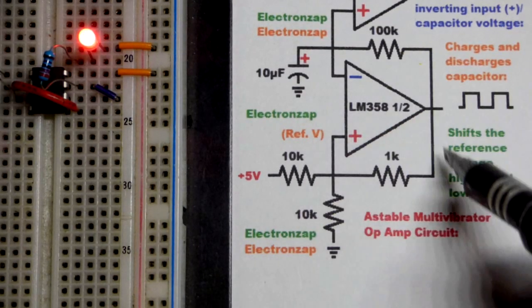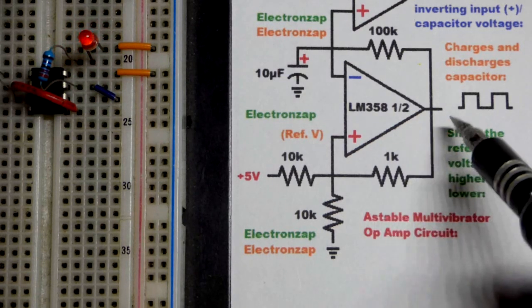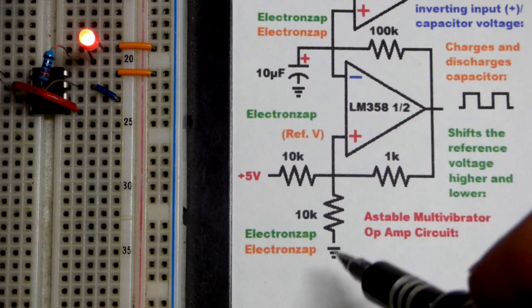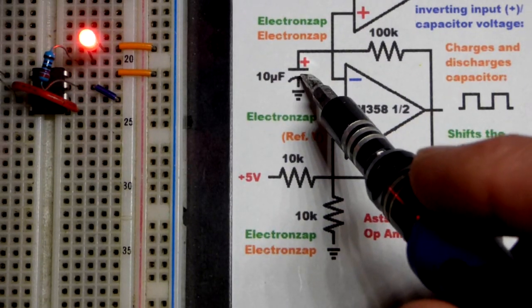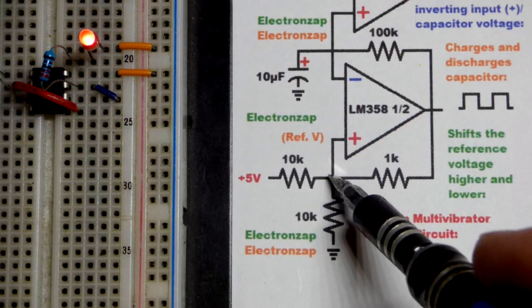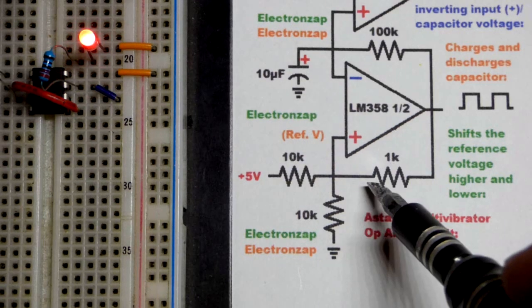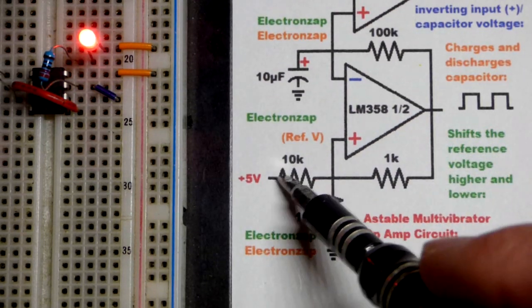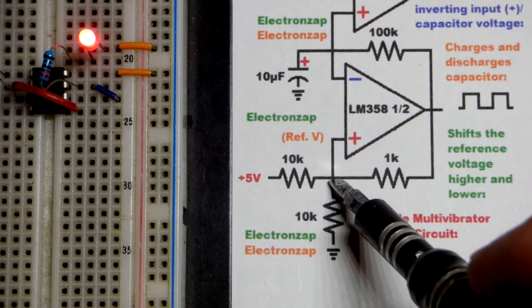The number one op amp is wired in astable mode. We looked at this in the last video. So it's going to keep going, the output high and low based on the timing that we set here. So the timing is the capacitor charging and discharging. The reference voltage to determine whether it's charging or discharging is the non-inverting input here. So we have feedback coming back here. These two resistors are trying to keep it to about 2.5 volts approximately.